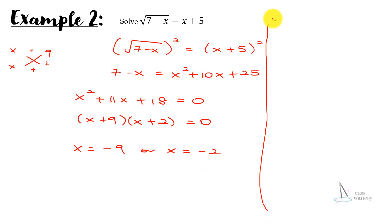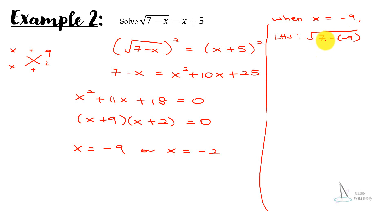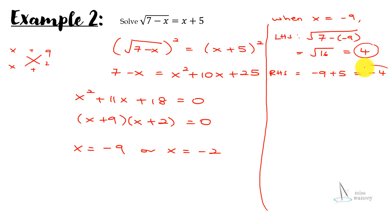Let's test x equal to negative 9. On the left-hand side: 7 minus (−9) = 7 + 9 = square root of 16 = 4. On the right-hand side: negative 9 plus 5 = negative 4. Since 4 is not equal to negative 4, x = −9 must be rejected.